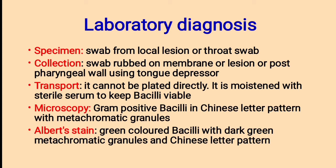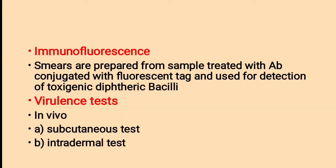Laboratory Diagnosis. Specimen: a swab collected from local lesions or throat, rubbed on the membrane or posterior pharyngeal wall using a tongue depressor. Transportation: the swab is moistened with sterile serum to keep bacilli viable. Microscopy: gram staining shows gram-positive bacilli with Chinese letter arrangement and metachromatic granules. Albert stain is mainly used for identification of metachromatic granules, showing green-colored bacilli with dark green metallic granules. Immunofluorescence: smears treated with antibody conjugated with fluorescent dye for detection of toxigenic diphtheritic bacilli.